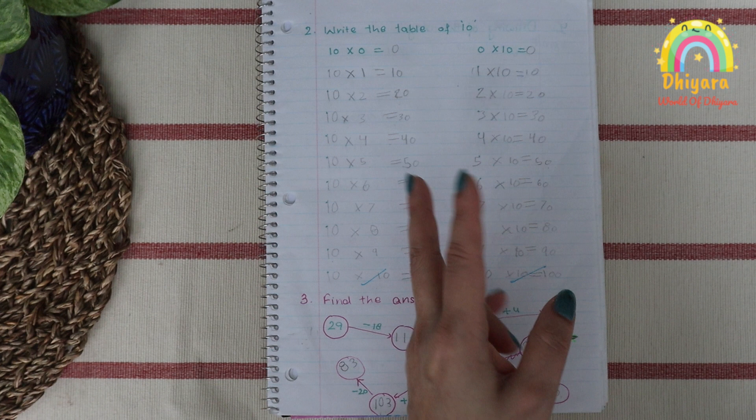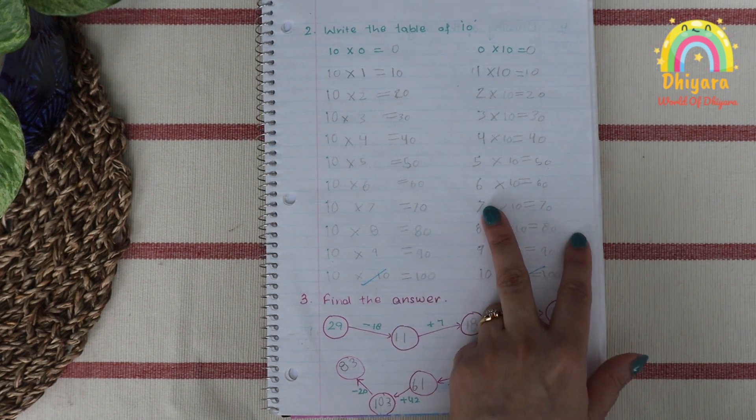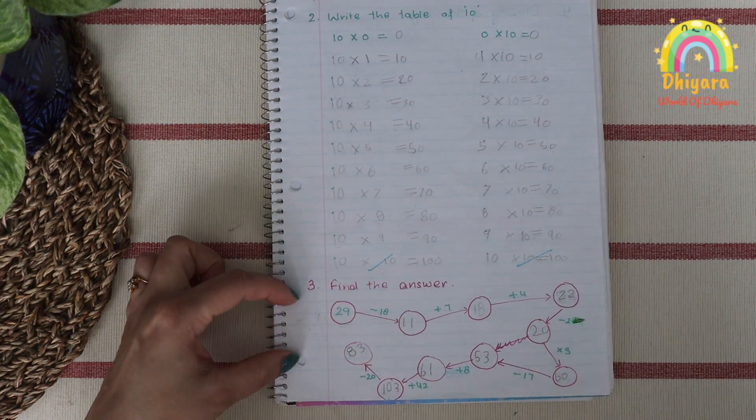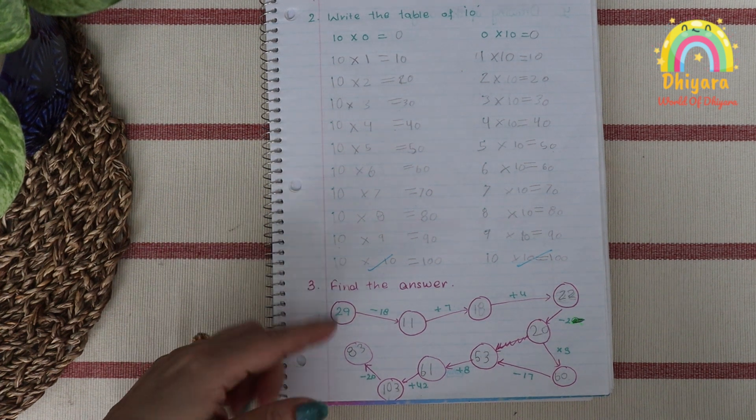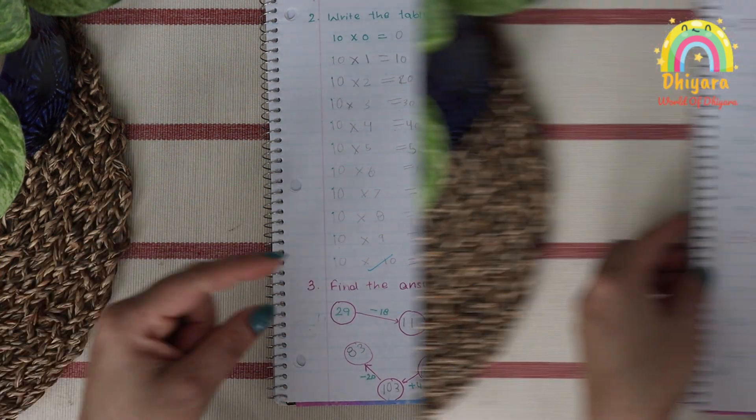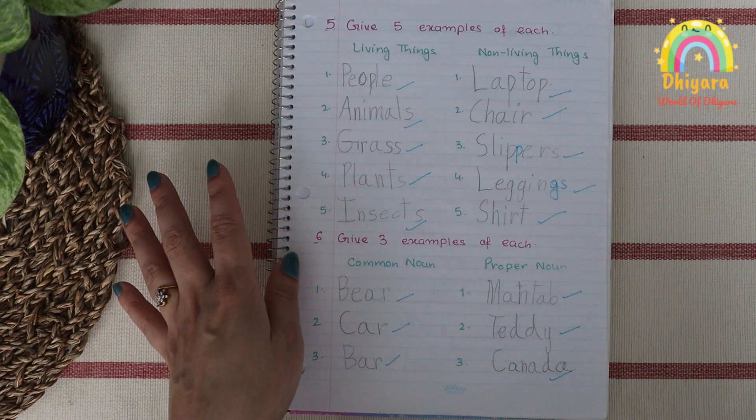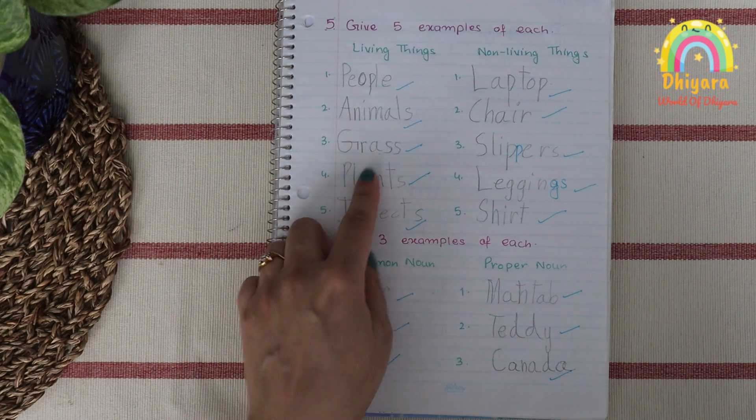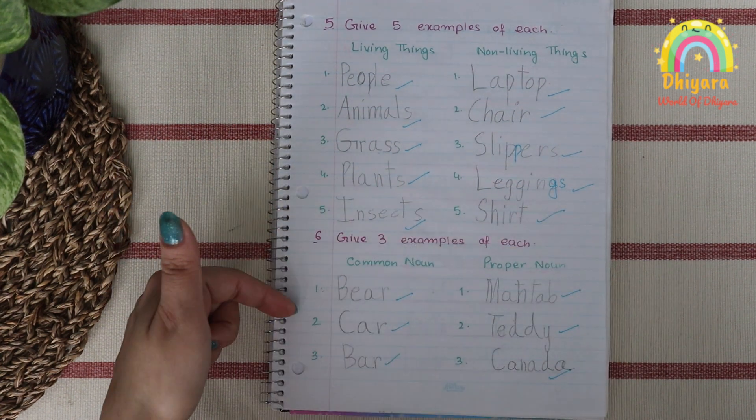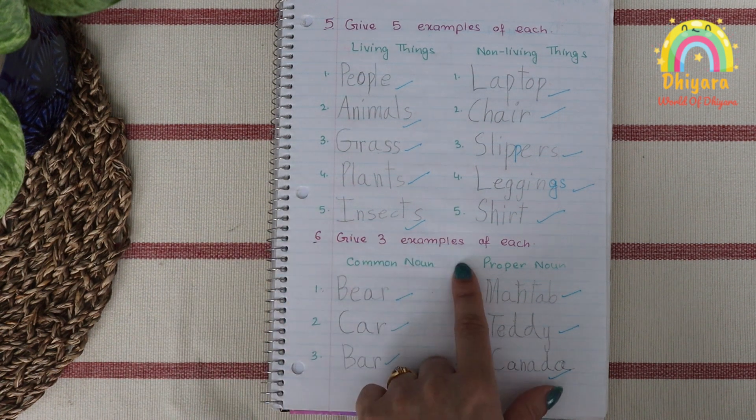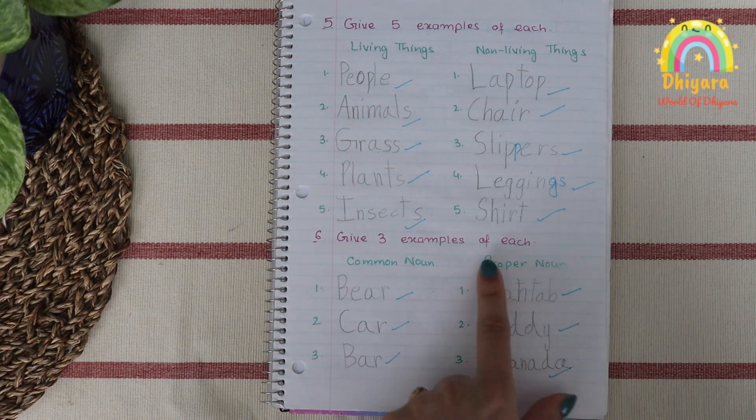Next we practiced living things and non-living things. Below this I asked her to give three examples of each. Then I have written three common nouns and three proper nouns for writing examples.